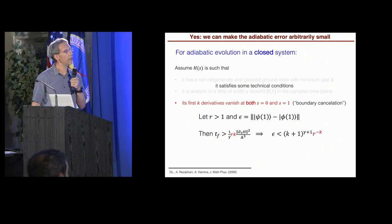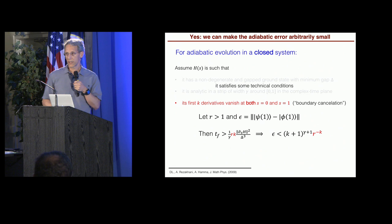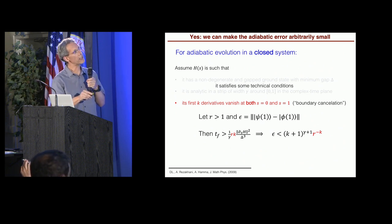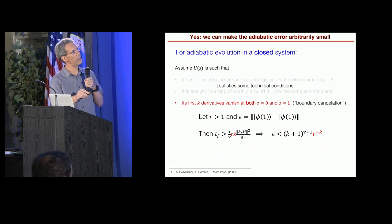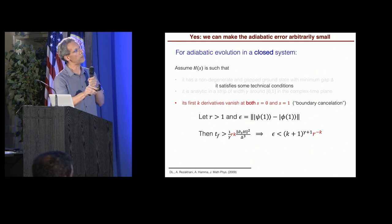So what we can prove is the following statement. Suppose there's some number greater than 1. And let this be the error between the actual state and the desired state. The theorem says that provided you make the total time greater than this quantity here, which involves the inverse gap cubed, and that number r and k, the number of derivatives that we set to zero. So notice how r and k get multiplied here. So if you make k bigger, then you just linearly increase the time.